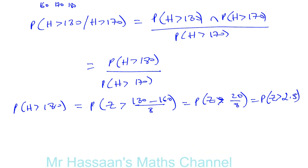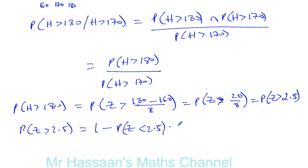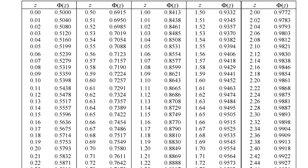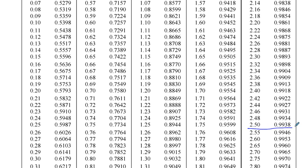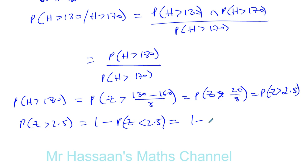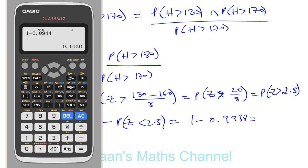In the table we see what's less than, so the probability that z is greater than 2.5 is the same as 1 minus the probability that z is less than 2.5. The table only gives us the area to the left, so we want 1 minus that. Going to 2.5 on our table gives 0.9938, so we have 1 minus 0.9938, which gives us the probability that the height is greater than 180.